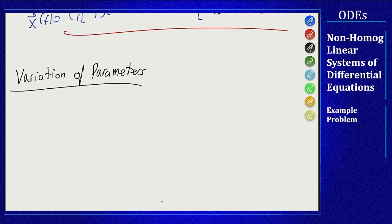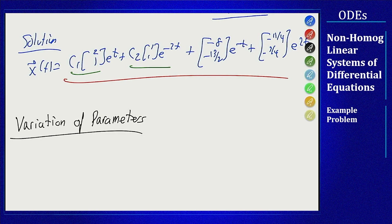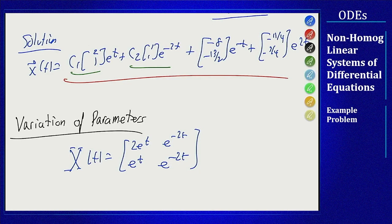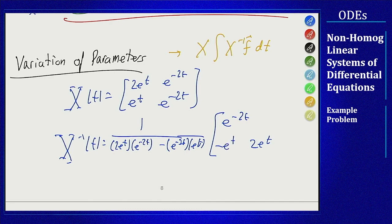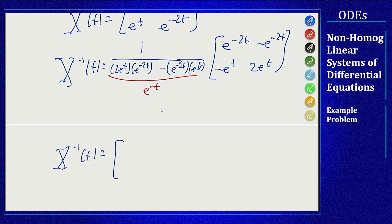Method 3 is variation of parameters. We build the fundamental matrix X from the homogeneous solution: X = [2e^t, e^(-2t); e^t, e^(-2t)]. We need X-inverse. The determinant is 2e^(-t) - e^(-t) = e^(-t), and after computing, X-inverse = [e^(-t), -e^(-t); -e^(2t), 2e^(2t)].